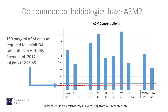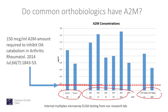Do common orthobiologics have A2M? We can see that serum, platelet-poor plasma, and the serum found in bone marrow aspirate all have enough A2M — above the minimal amount needed. These are the amounts present in various patients we tested. Pretty much everybody we tested got over this threshold, meaning everyone had enough A2M to inhibit breakdown if injected into a knee.